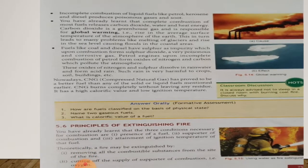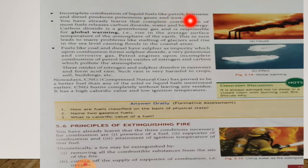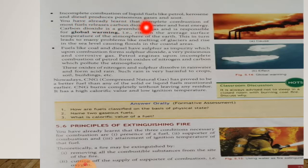Point 2: Incomplete combustion of liquid fuels like petrol, kerosene, and diesel produces poisonous gas and soot. Soot means carbon particles or lamp black.